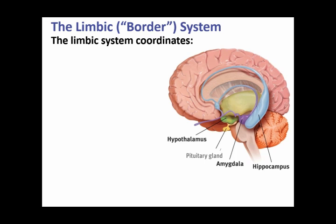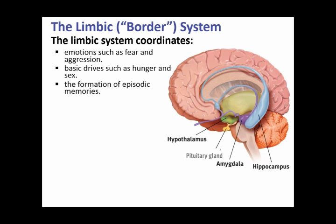The limbic system coordinates emotions — very basic emotions like fear and aggression. It handles very basic drives such as hunger and the drive to reproduce. It's also really important in the formation of episodic memories — your memory of episodes, things you know you know. The cerebellum handles things you don't necessarily know you know, while the limbic system has structures that help you store the things you consciously know. It helps you form those memories for permanent storage, though the information is not stored there permanently.